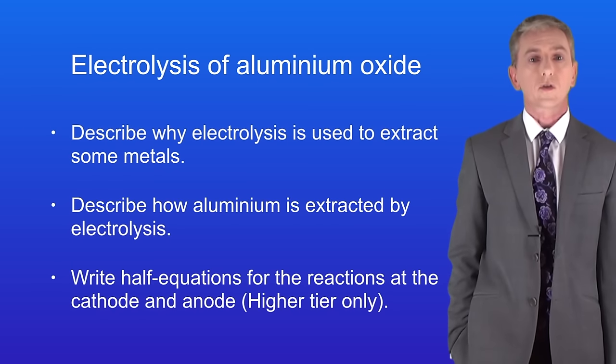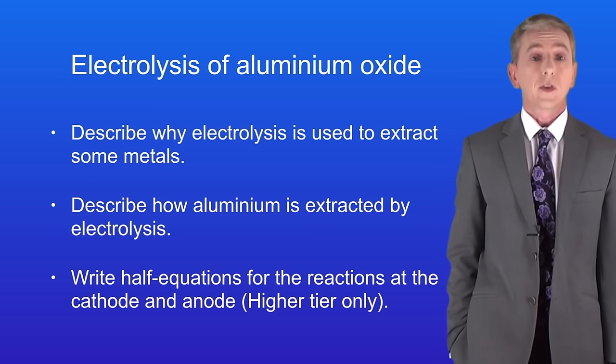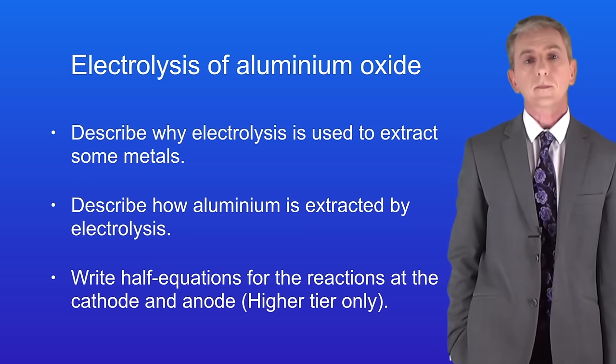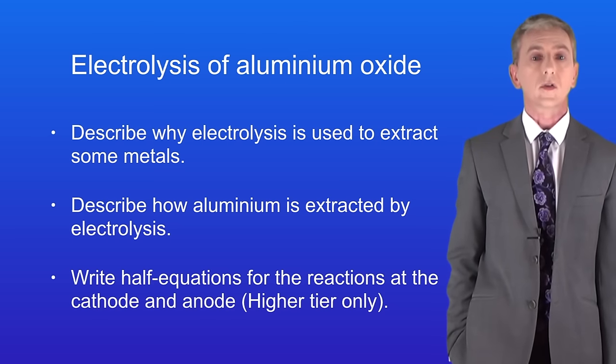Okay so hopefully now you should be able to describe why electrolysis is used to extract some metals. You should then be able to describe how aluminium is extracted by electrolysis. And finally if you're a higher tier student you should be able to write half equations for the reactions at the cathode and at the anode.